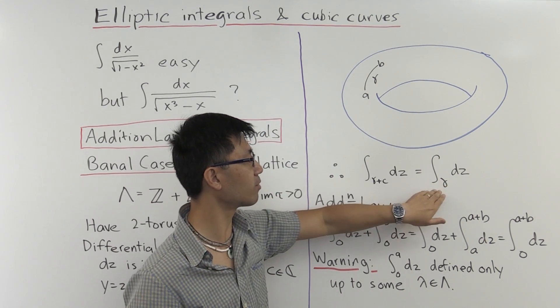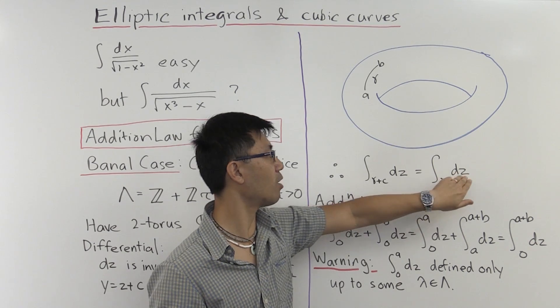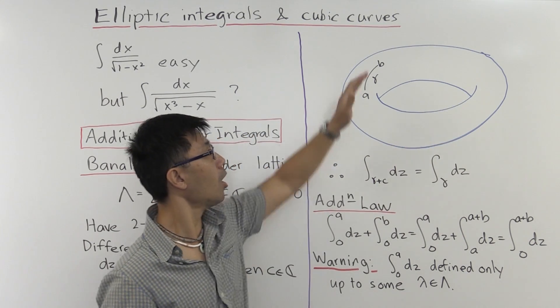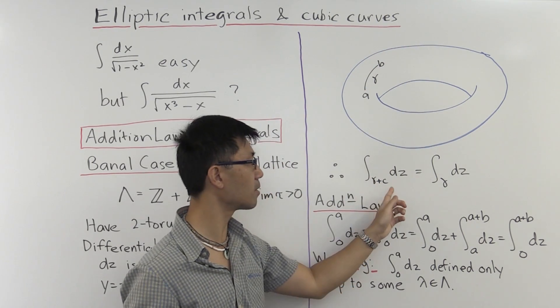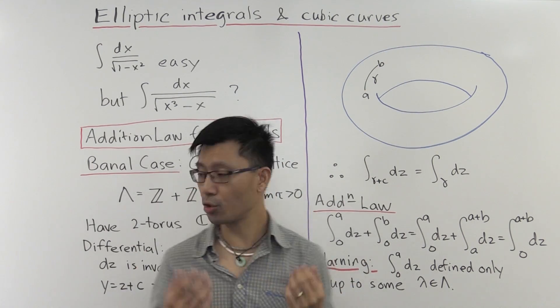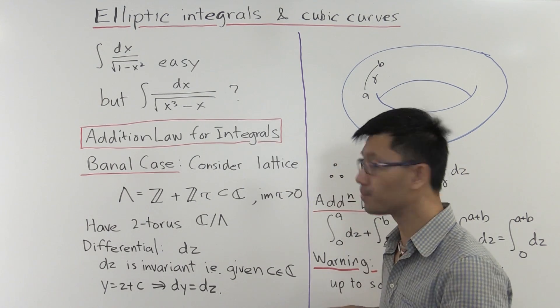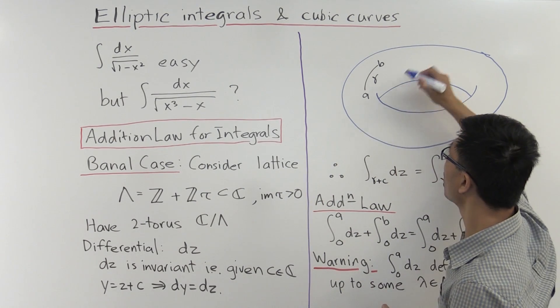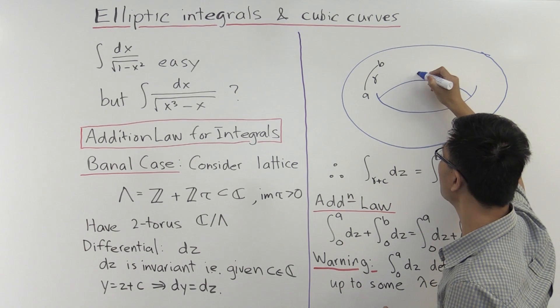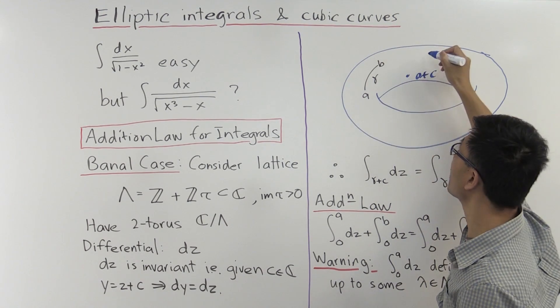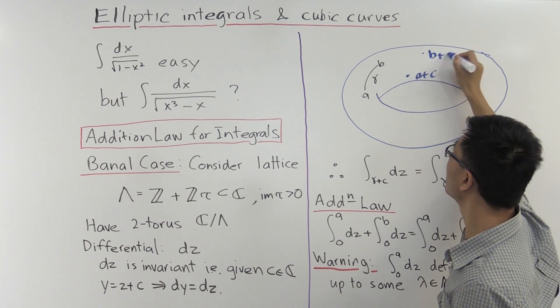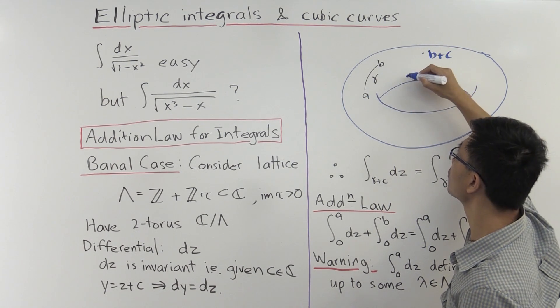We can also just shift this entire curve by some constant c. And that gives us a new curve. Let me draw it in for you now. So maybe a gets shifted to a + c, and b gets shifted to b + c. And more generally, this curve gets shifted to something like that. So that's γ + c.